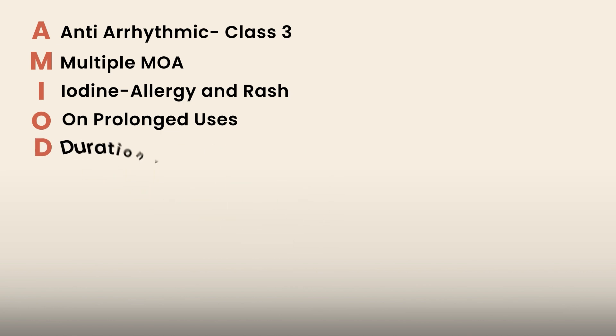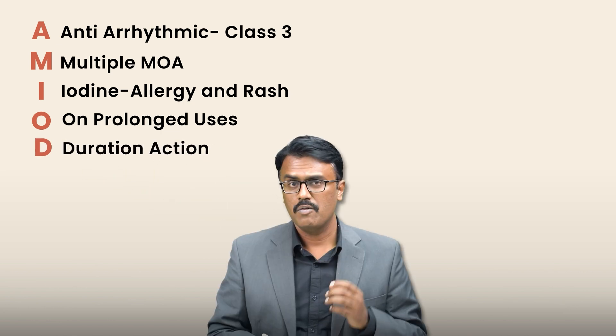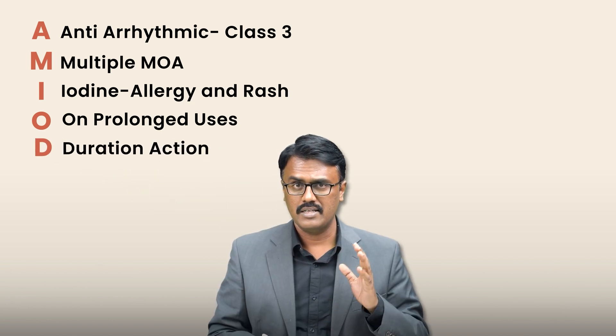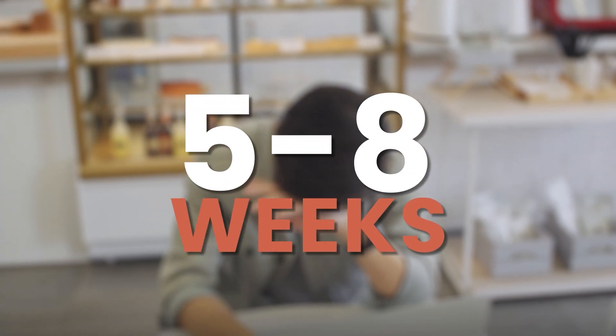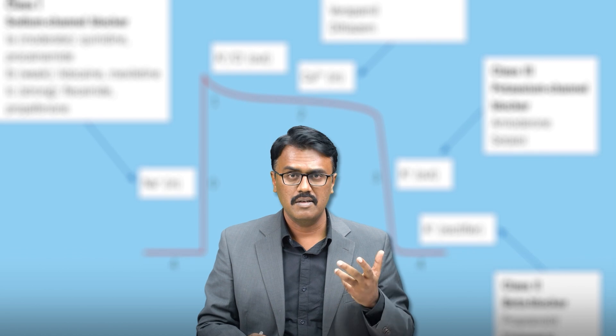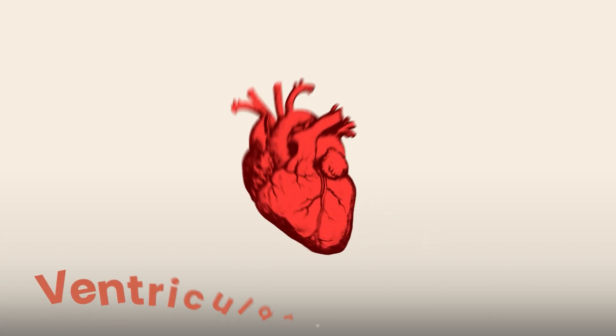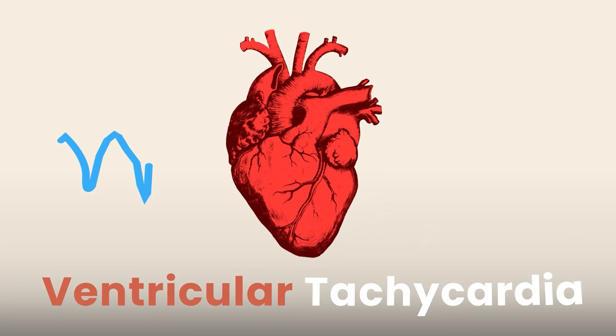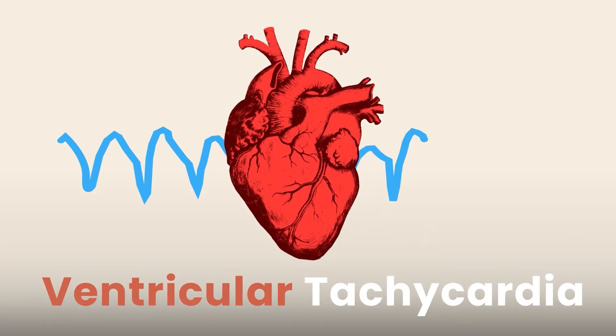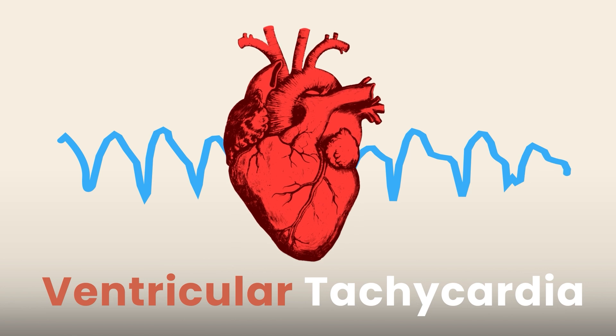D stands for duration of action — it is very long. Amiodarone has a half-life of around five to eight weeks, which is very, very long. It can also cause QT prolongation, because it is a potassium channel blocker. It is also the drug of choice for ventricular tachycardia.